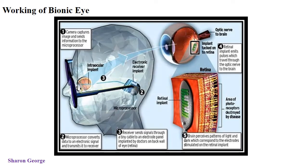Next, how is the bionic eye working? This shows the basic working of bionic eye. Here we can see the different parts: one is the camera, a microprocessor, the receiver, and the retinal implant. Finally, the brain receives the signal from the retinal implant. This is the overall working of the bionic eye. First, the camera captures the image and sends information to the microprocessor.